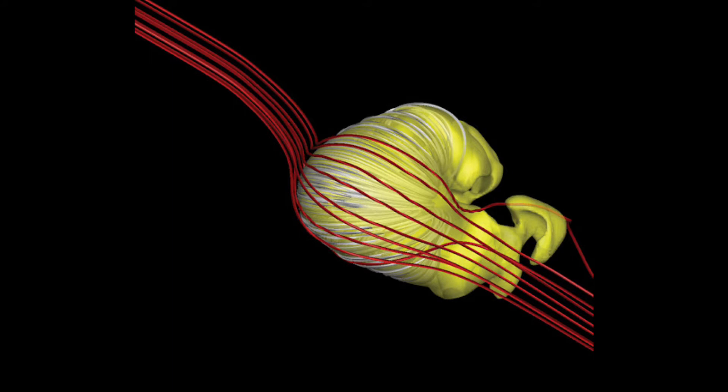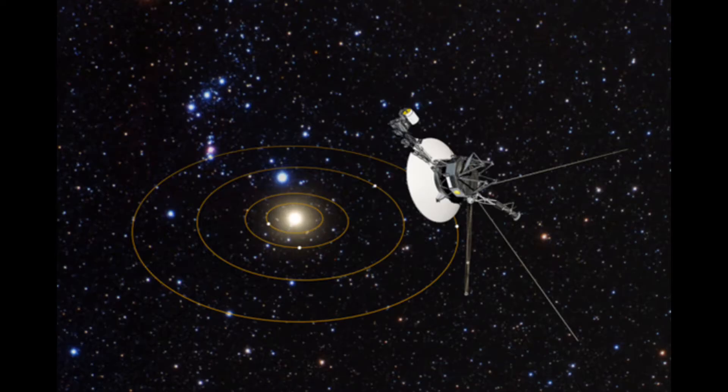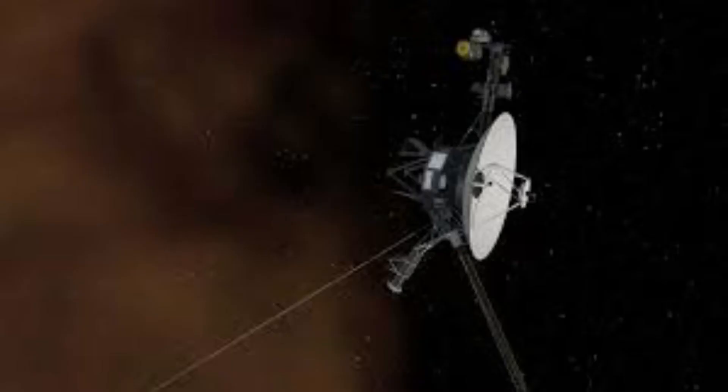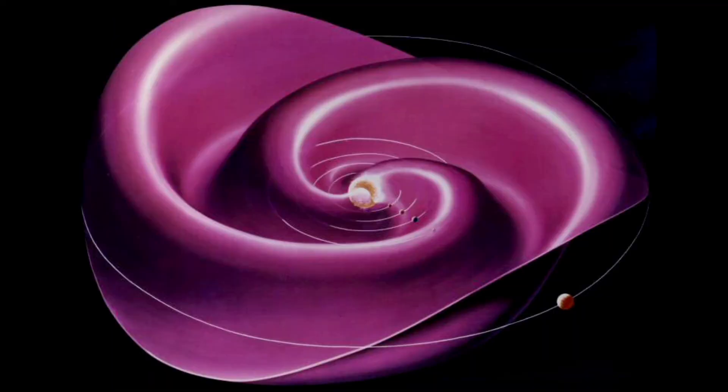Actually, we have had encounters with the edge of the heliosphere, a boundary known as the heliopause. Both Voyager probes launched over 40 years ago have encountered it and traveled past into interstellar space.